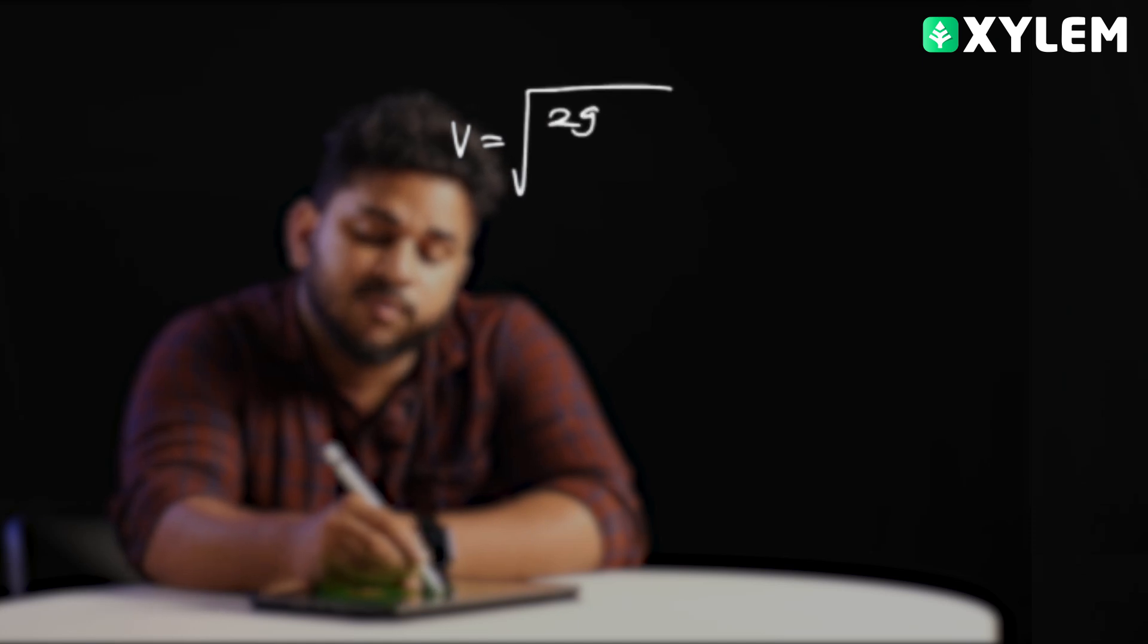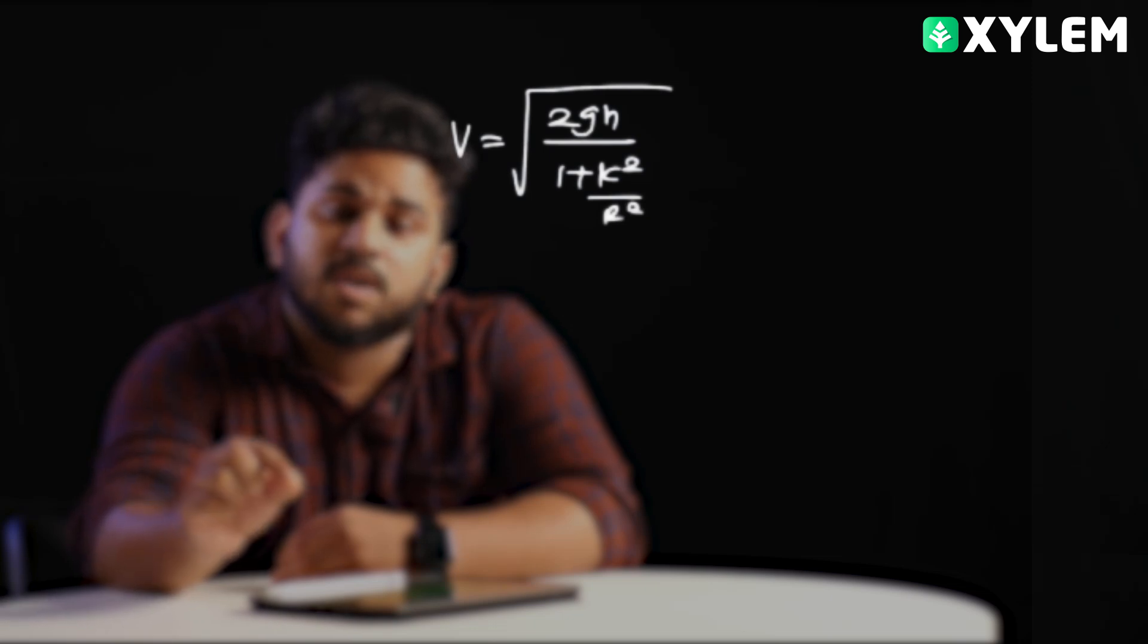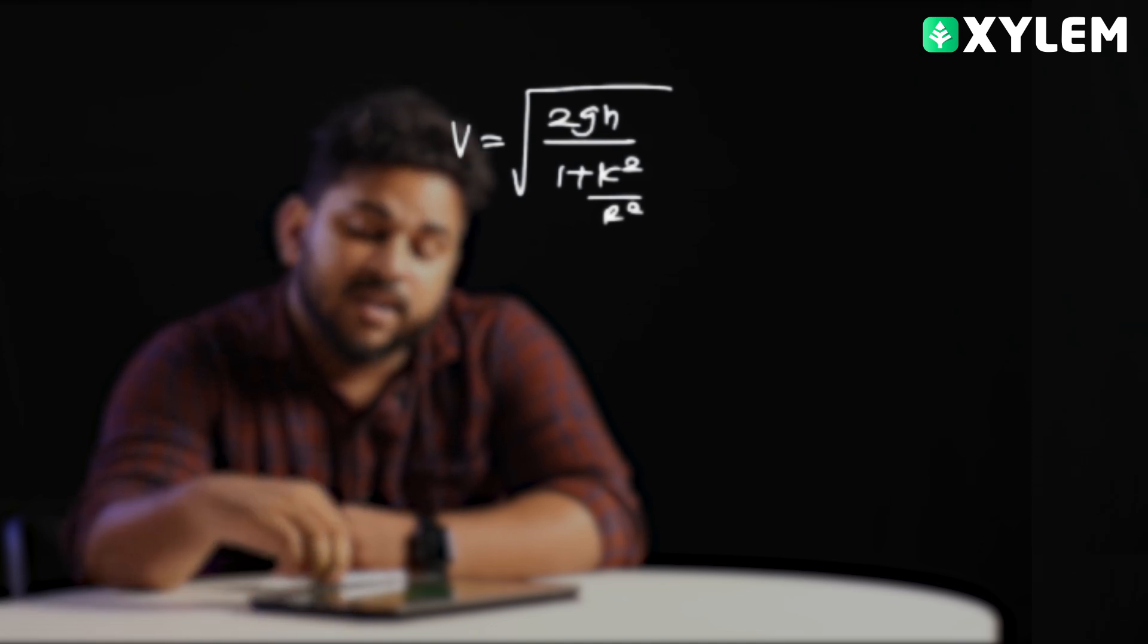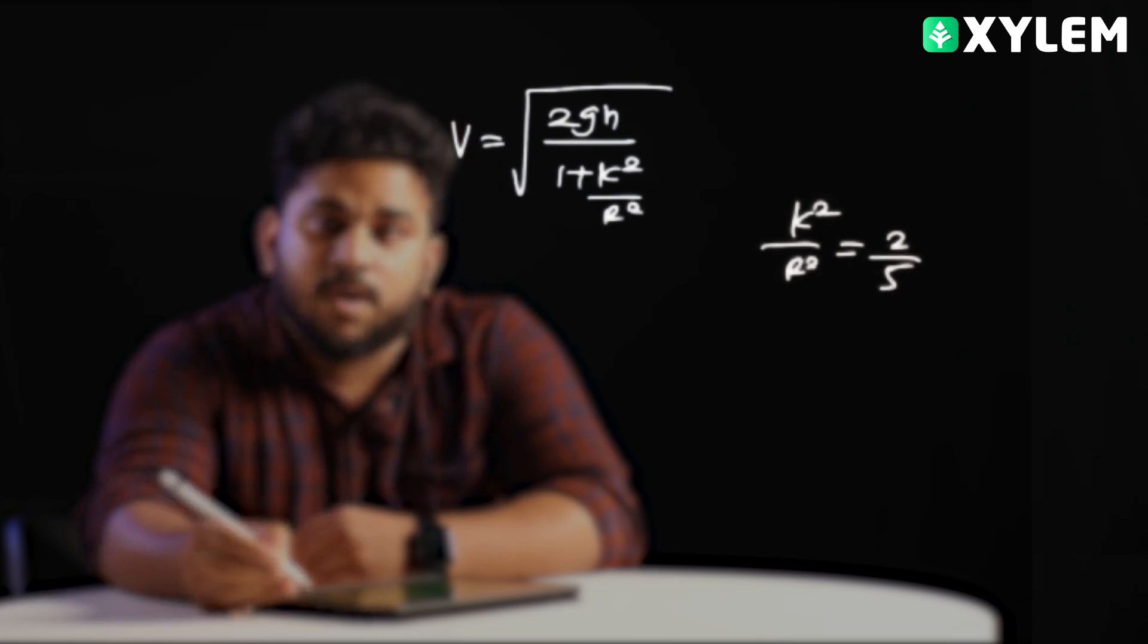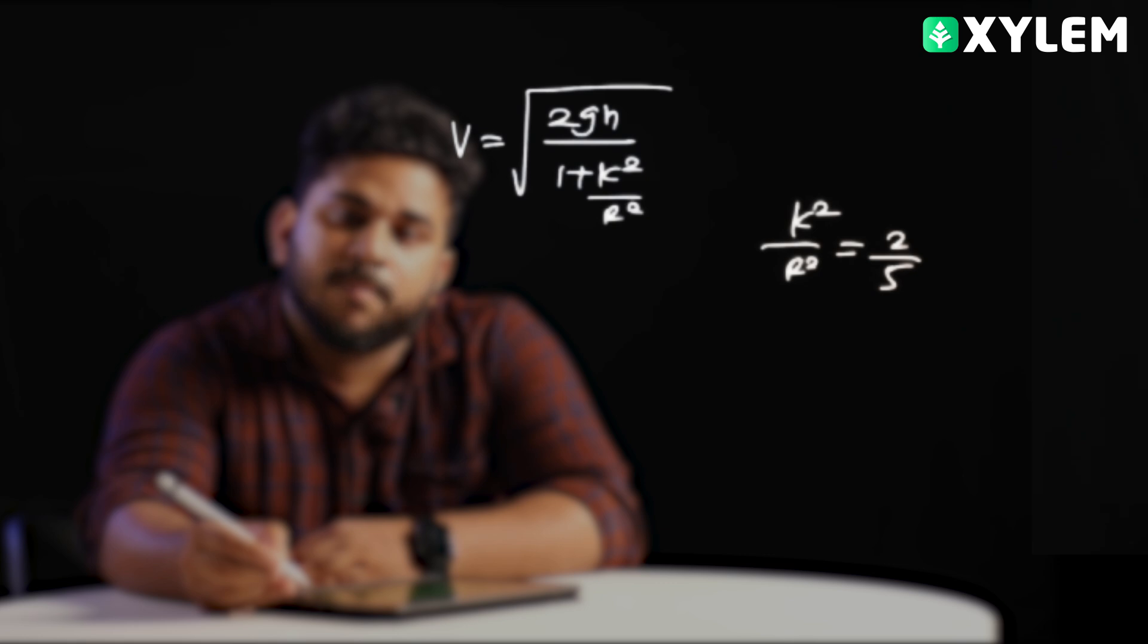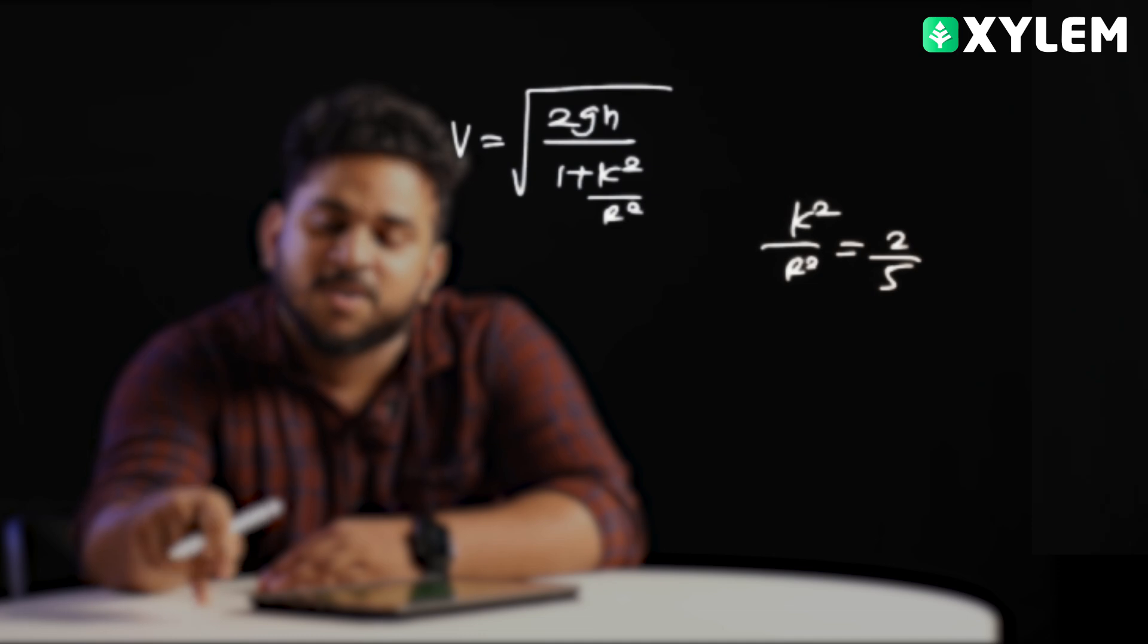For an inclined plane, the velocity equation is V equals square root of 2gh divided by 1 plus K squared by R squared. V is maximum when K squared by R squared is minimum. Comparing the K squared by R squared values for the different bodies, we can determine which reaches the ground with maximum velocity.